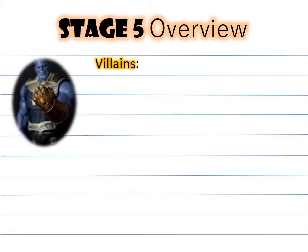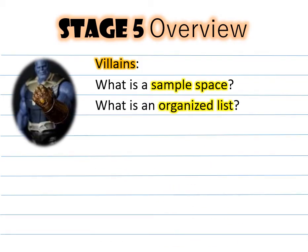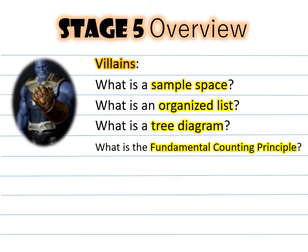Our stage 5 overview, the villains, the vocabulary words. What is a sample space? What is an organized list? What is a tree diagram? And what is the fundamental counting principle? It's not as hard as you think.